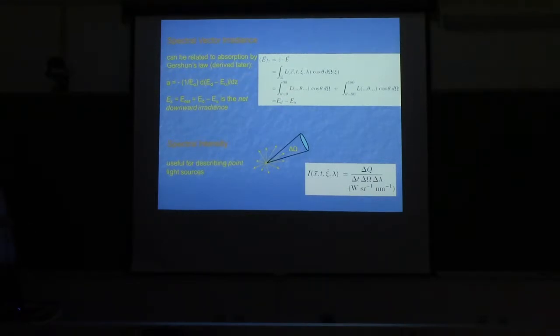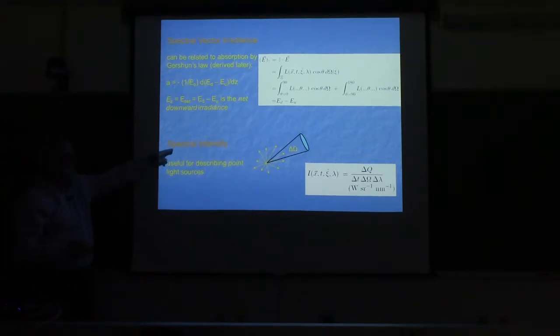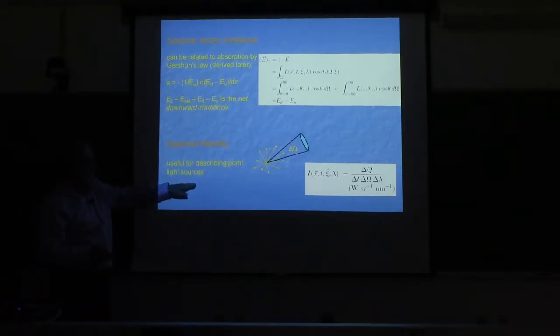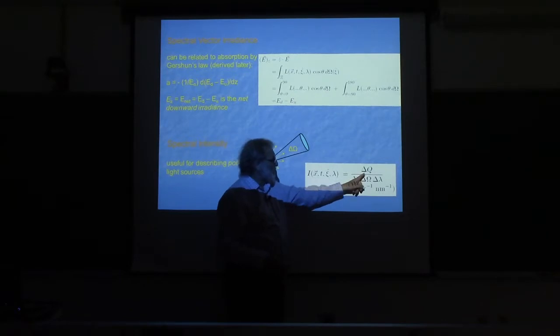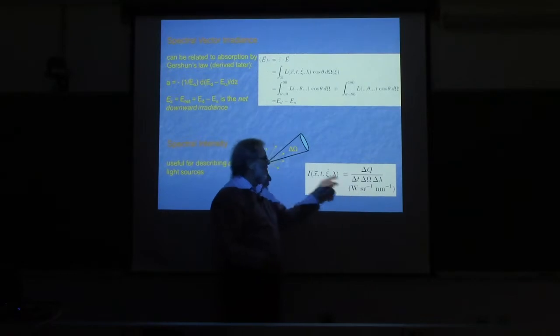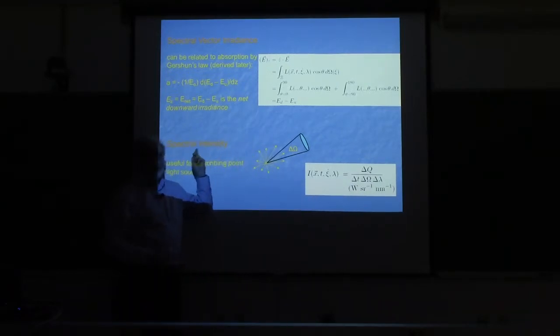There's also something called the spectral intensity, which is the power emitted by a small or point source per unit steradian. There's no per unit area here, so it's joules per second emitted per steradian per wavelength band.